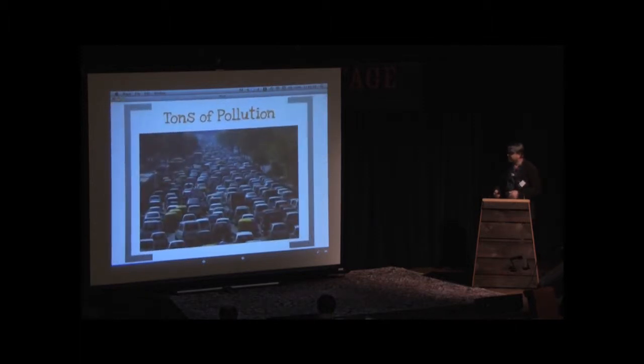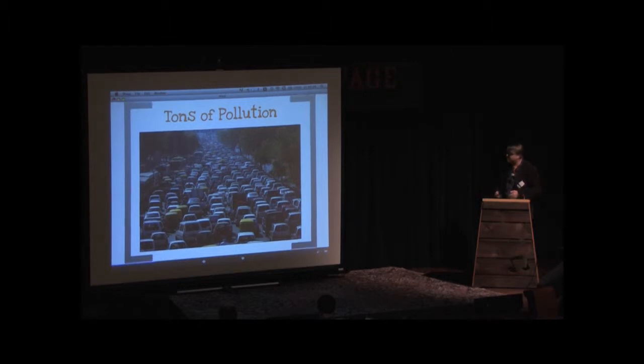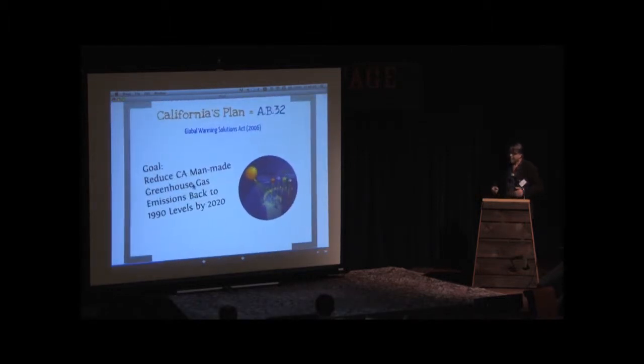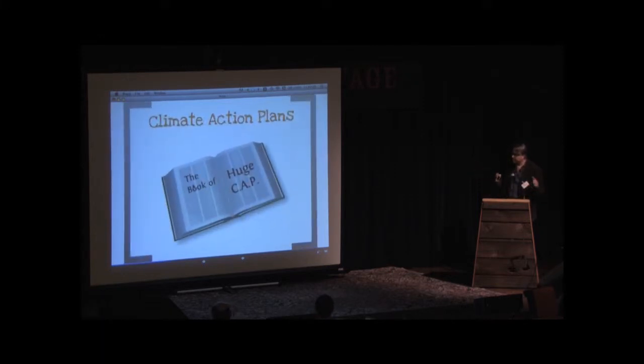As a result, we have fun traffic jams, lots of pollution. And then the state of California said we need to deal with this pollution issue, and AB 32 is focused on CO2 emissions. The goal here is to go back to 1990 levels in about six or seven years. So AB 32 is the driver here.